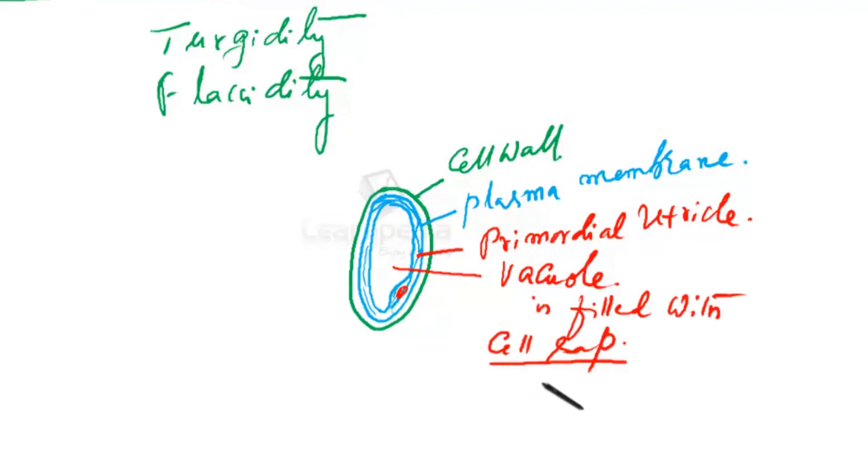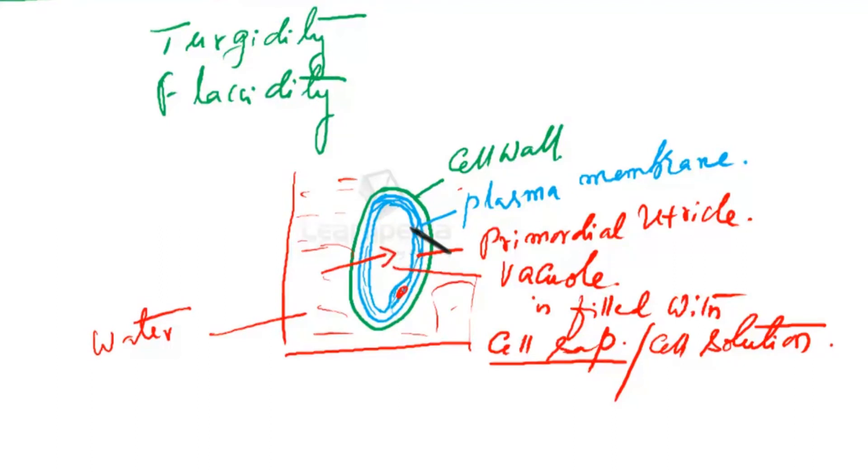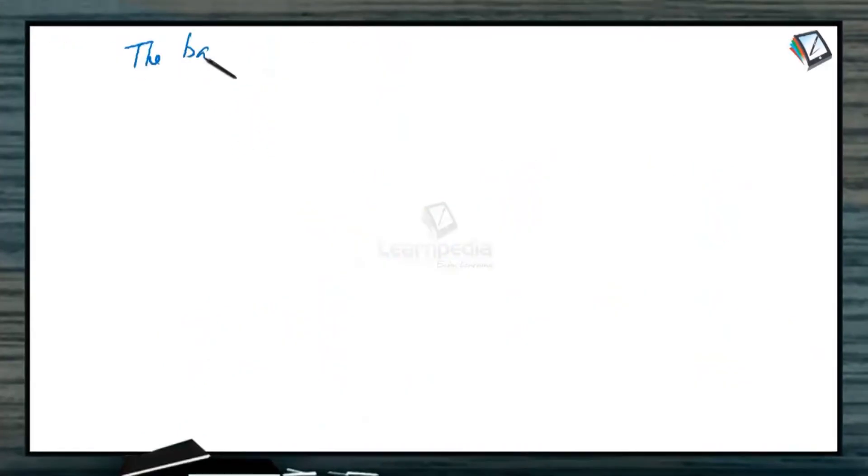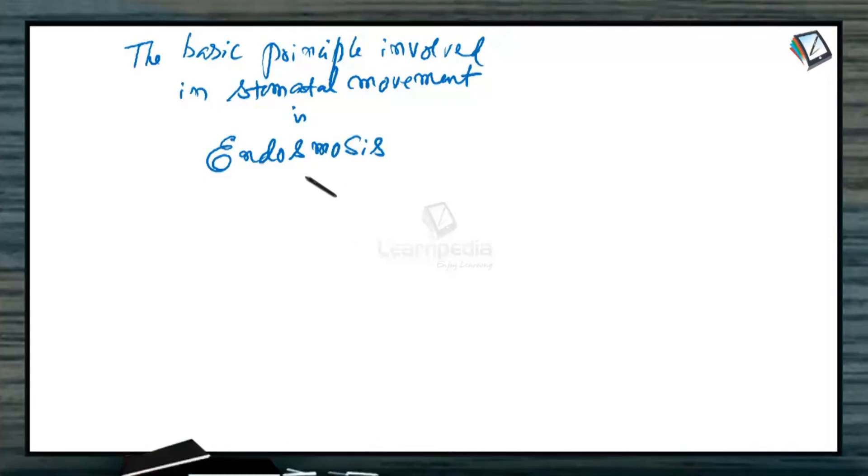This cell sap is nothing but cell solution. If this cell is placed in a beaker of water, what happens? The water enters into the cell by osmosis. So naturally the cell enlarges. The enlargement of the cell is called turgidity. The basic principle involved in stomatal movement is endosmosis.